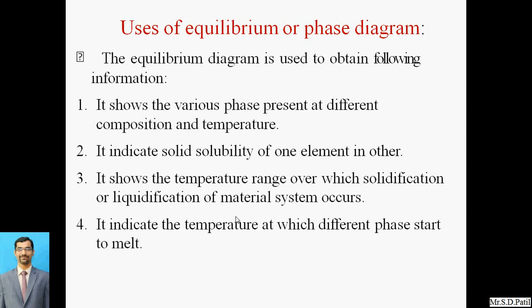It also indicates the temperature at which a phase starts to melt — the exact temperature where phase transformation occurs. Phase transformation means from solid to liquid or liquid to solid. This particular temperature is needed to convert a metal into any phase, either solid or liquid. These are the different uses of equilibrium diagrams.